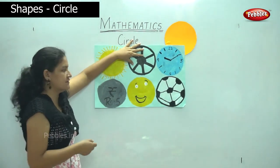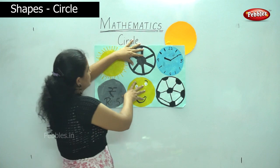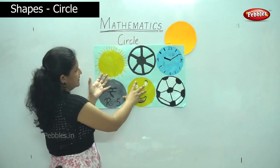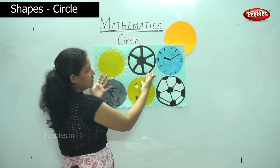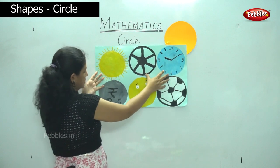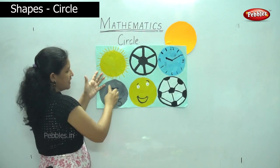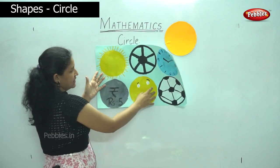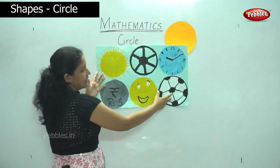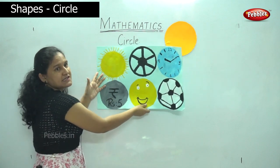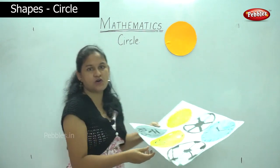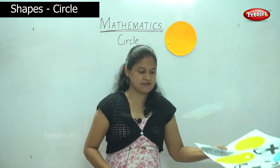So to recap, we have the sun, the cycle wheel or car wheel, the clock, the 5 rupee coin, the smiley face, and the football. These are some examples of the circle.